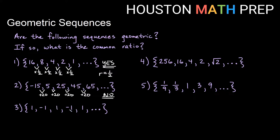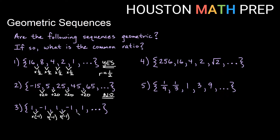For the third one, I have 1, negative 1, 1, negative 1, 1 — this alternating positive-negative pattern. We might have looked at this before and said it was not geometric because we had minus 2 then plus 2 alternating as our pattern. But if we try to look at it as multiplication: how do I multiply to get from 1 to negative 1? The answer is I multiply by negative 1, and the same thing to get from negative 1 to positive 1 — I also multiply by negative 1. So this is actually geometric because it's just a pattern of multiplying by negative 1 to change the signs each time. Yes, this is geometric, and our common ratio is negative 1.